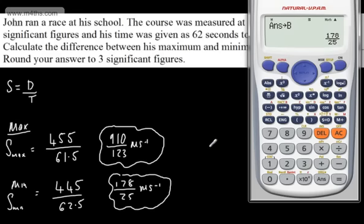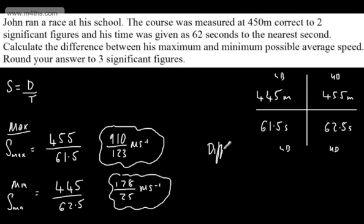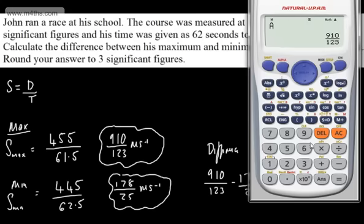For the difference, we take 910 over 123 minus 178 over 25. I'm using the exact values without rounding. Remember, we're giving our answer to three significant figures. In the calculator, this is A minus B, which gives 856 over 3075. That's 0.278 to three significant figures.